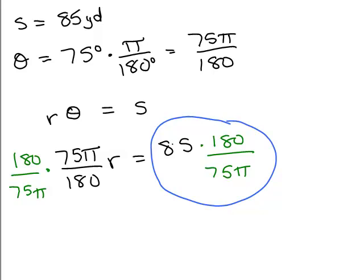So on my calculator, I have an order of operations calculator. So I'm going to do 85 times 180, then I'm dividing by 75 pi. And I get... I have to be careful. You have to put the 75 pi in parentheses to get the right answer, or you could do 85 times 180 divided by 75 and then divide by pi.